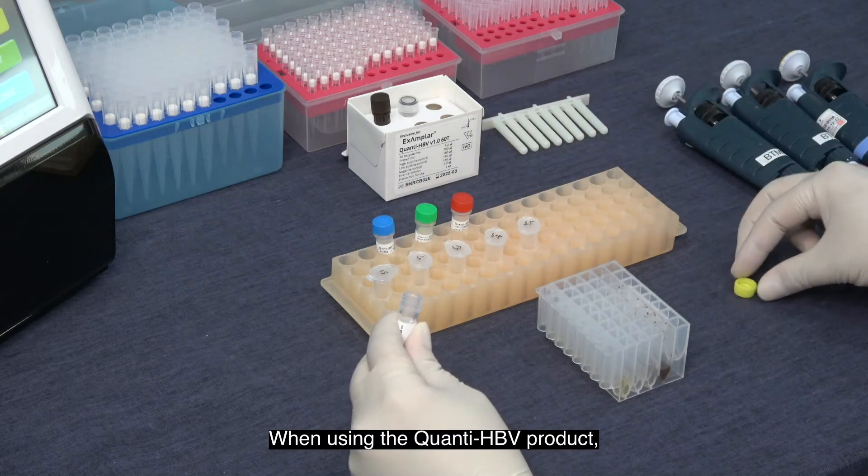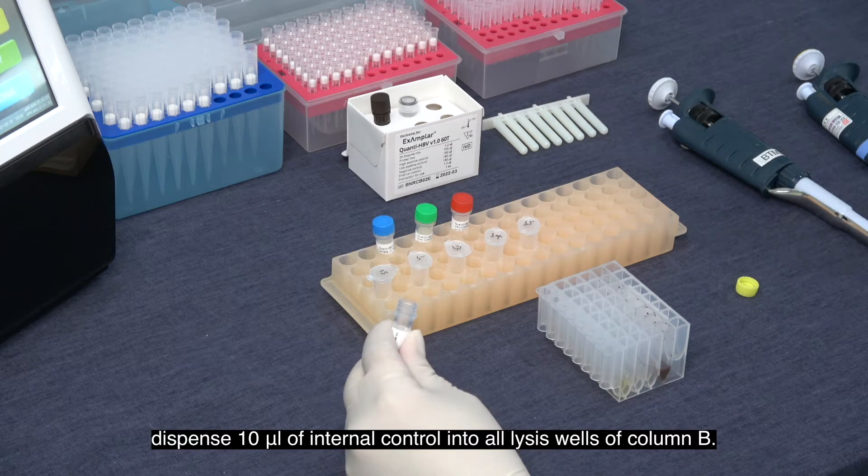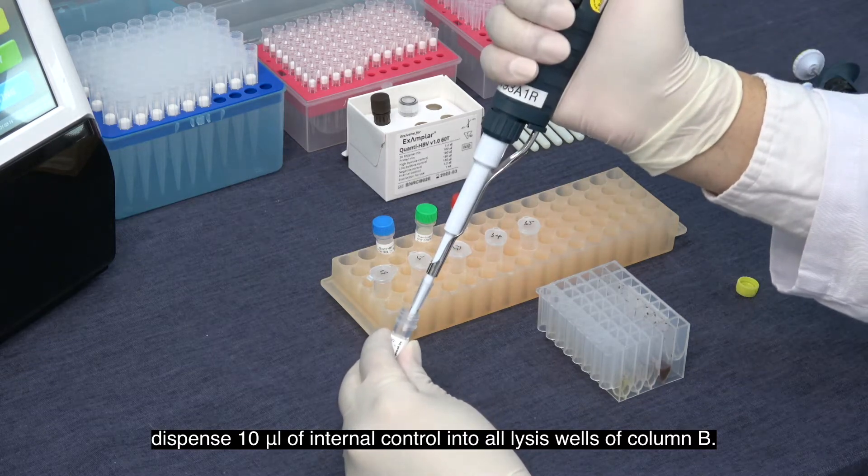When using the Quanti HBV product, dispense 10 microliters of internal control into all the lysis wells of column B.